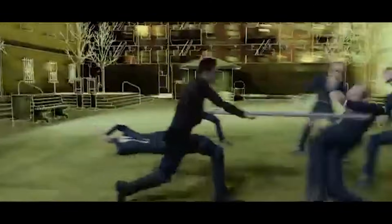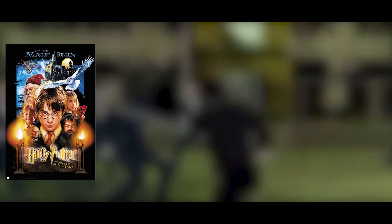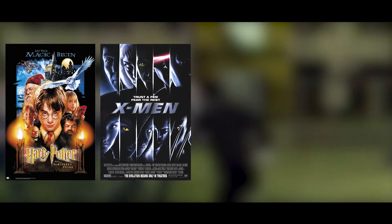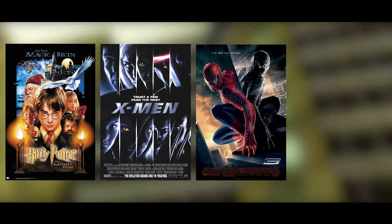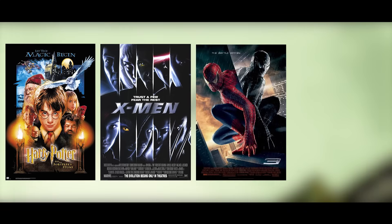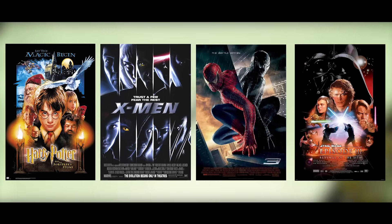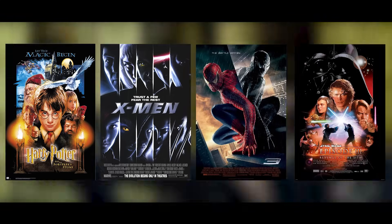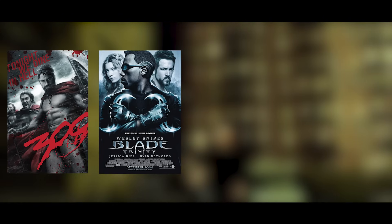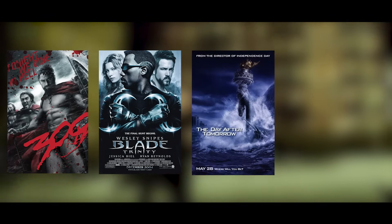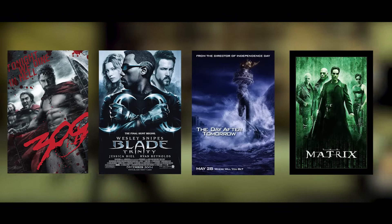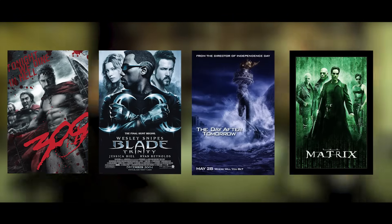Many other blockbuster titles of that era had some 3DS Max footprint, including Harry Potter movies, X-Men movies, Spider-Man 3, Star Wars Episode 3: Revenge of the Sith, 300, Blade Trinity, The Day After Tomorrow, and The Matrix movies.